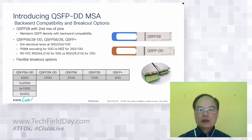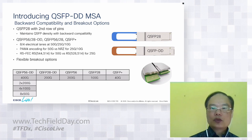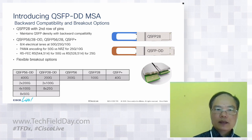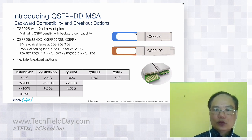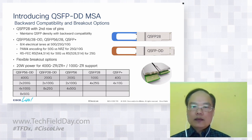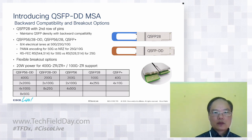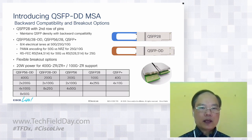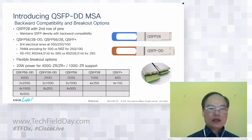QSFP56-DD can be broken out to 2x200, 4x100, and 8x50. QSFP28-DD can be broken out to 2x100 and 8x25. QSFP56 can be broken out to 2x100 and 8x25. QSFP28 to 4x25, and QSFP Plus to 4x10. QSFP-DD also supports much higher power consumption — up to 20 watts — for future optics such as 400-gig ZR and ZR-Plus coherent optics, and 100-gig ZR support.